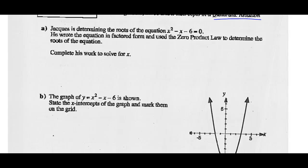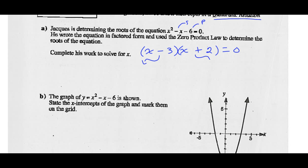So x² - x - 6 = 0. He factored it by inspection. The only way to get x² is to put an x in the front of each bracket. What two numbers have a sum of -1 and a product of -6? Those numbers are -3 and +2. He then used the zero product law — set each variable factor equal to 0: x - 3 = 0 or x + 2 = 0. Here x = 3, here x = -2. So there are his solutions: x = 3 or x = -2.